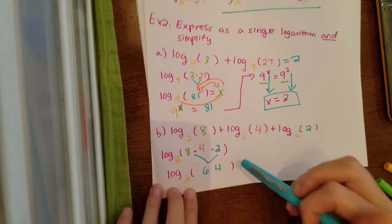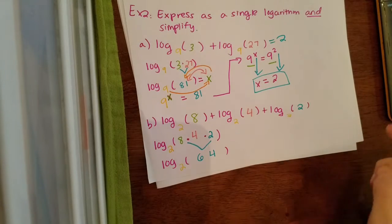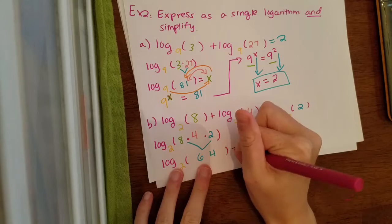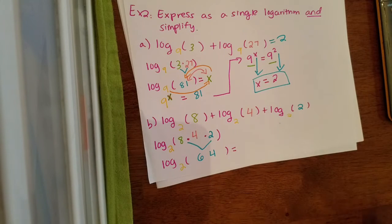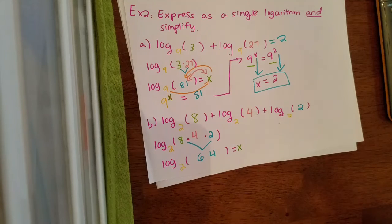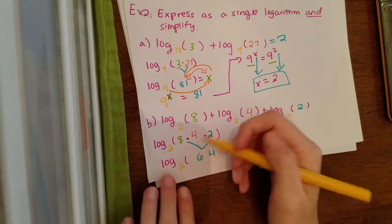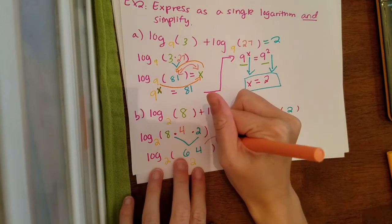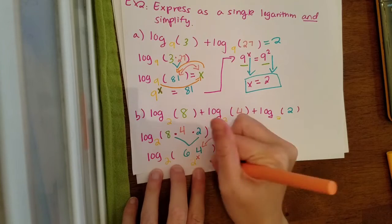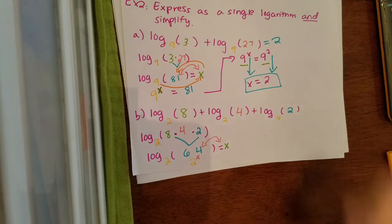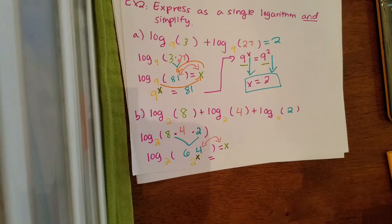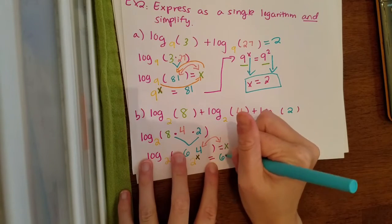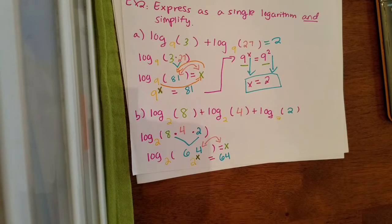Not only do we have to express this as a single log, we have to simplify — I want to know what this log equals. We start by setting this equal to x, because that makes it easier to convert into an exponential. The base of my exponential is the base of my log, which is 2. Then x and 64 flip-flop places: x hops with my 2, and 64 hops to the other side. So: 2 to the x power equals 64.